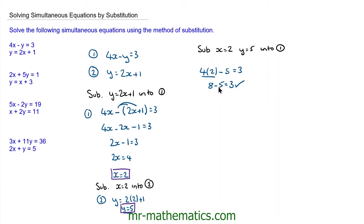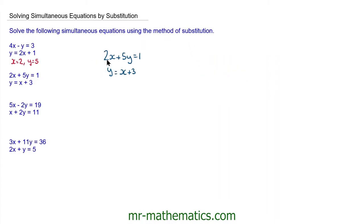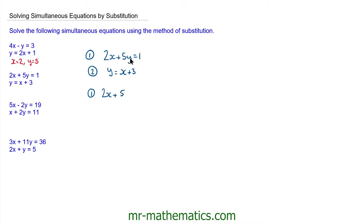OK, let's try the next question. I'm going to begin by labelling the top equation as equation 1 and the other equation as equation 2. I'm going to substitute this value of y — so x plus 3 — into equation 1, in place of the y here. So for equation 1, we have 2x plus 5y, and y is x plus 3, and this is equal to 1.